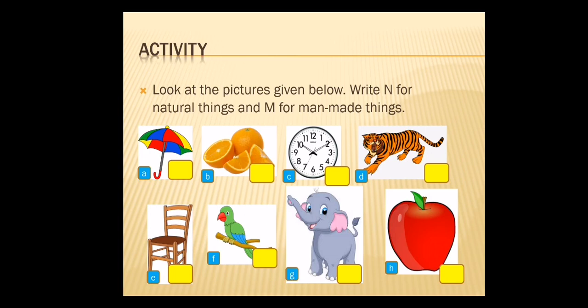Now see the third one — watch. If it is a natural thing, write the letter N. If it is a man made thing, write the letter M. The watch is man made, so you can write the letter M. See the fourth one — tiger. Tiger is natural, so you can write the letter N.